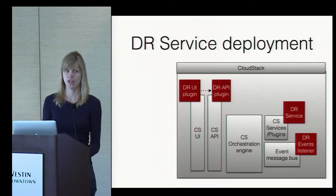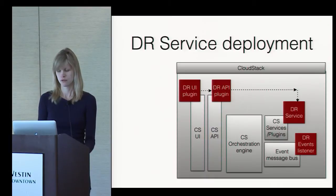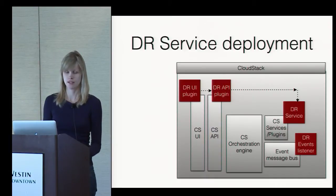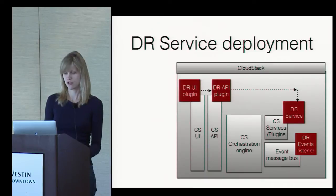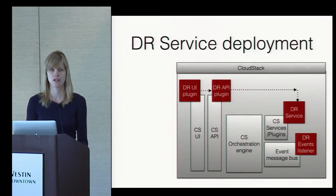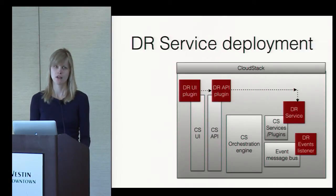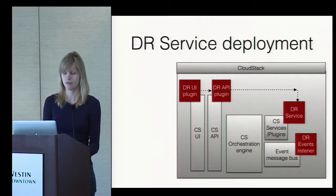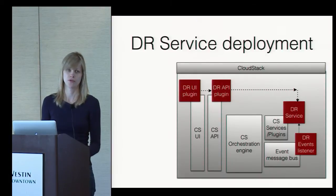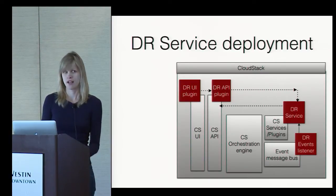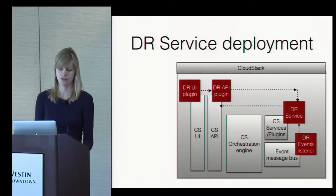All calls to the DR services can be made either through the DR API plugin, or there is a DR events listener that listens to specific events happening on the cloud stack side — for example, VM deployment events or any changes done for the VM. Cloud stack publishes these events to the event bus and the DR plugin listens to them and reports back to the DR service. The DR service doesn't talk directly to the cloud stack orchestration engine — all calls are done through the cloud stack APIs.